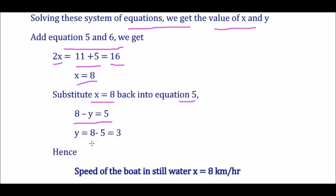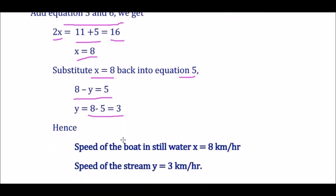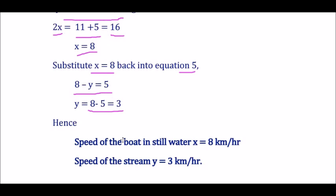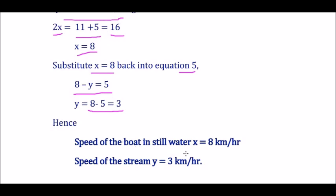Hence, the speed of the boat in still water is X = 8 kilometers per hour, and the speed of the stream is Y = 3 kilometers per hour. That is all for this video. Thank you for watching — stay tuned for the next video.